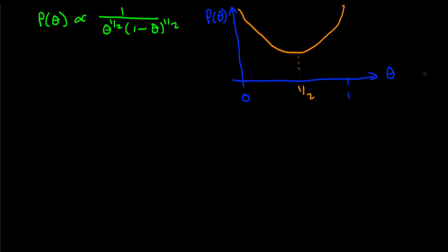You can see that the Jeffreys prior is very much a non-uniform prior in terms of theta. Why does it take this shape? The idea is that it reflects the shape of the likelihood. If you obtain data that looks like it could have come from theta equal to a half, there are a wide variety of possible thetas that could have generated that data, meaning we have quite a lot of uncertainty around estimates near theta equals a half.